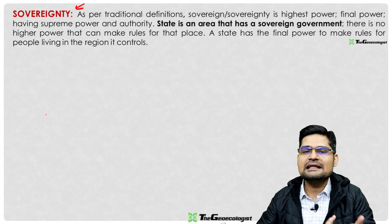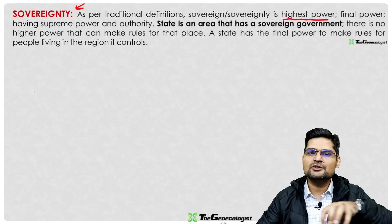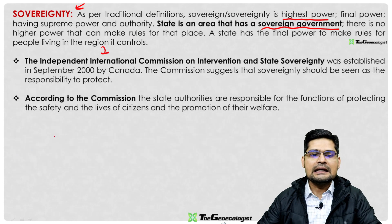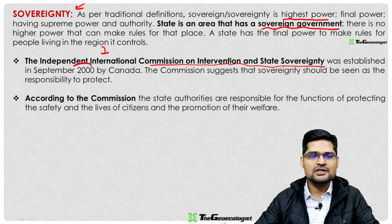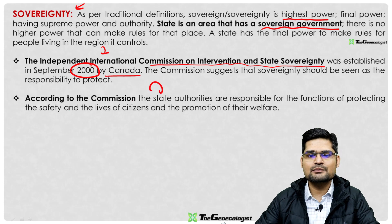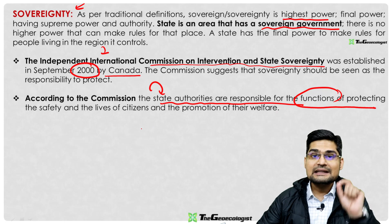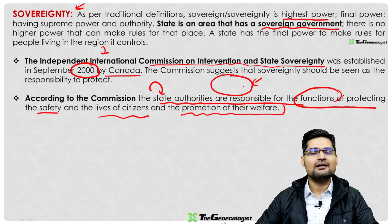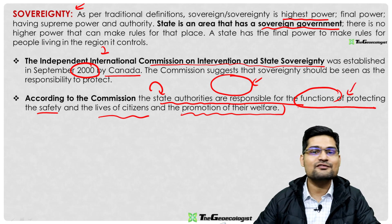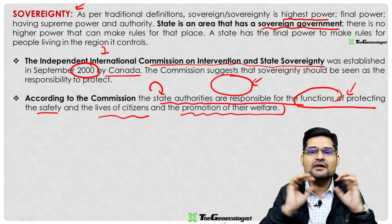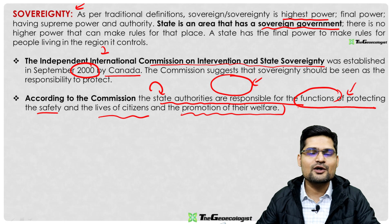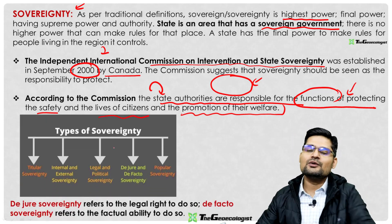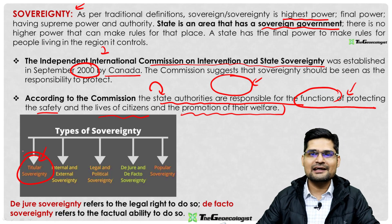The last important attribute is sovereignty. The traditional definition is the highest or final power of authority in a given territory. The Independent International Commission on Intervention and State Sovereignty, established in 2000 by Canada, defines it as state authorities being responsible for protecting the safety and lives of citizens and promoting their welfare — a social welfare definition, beyond merely exercising power.